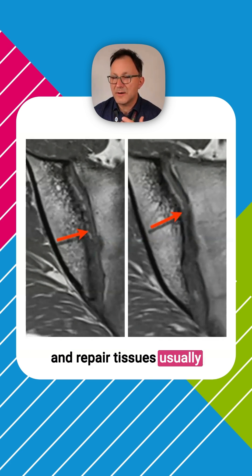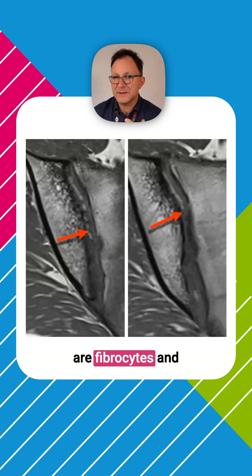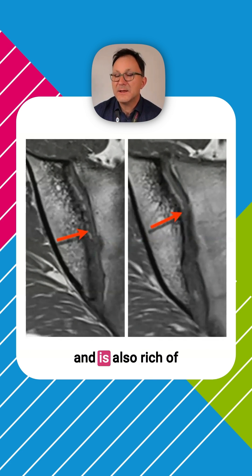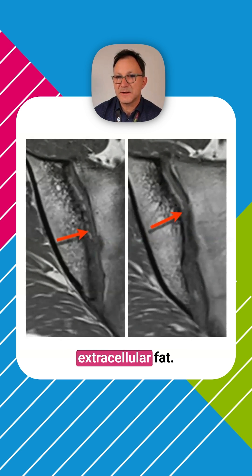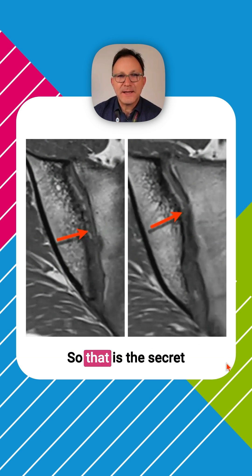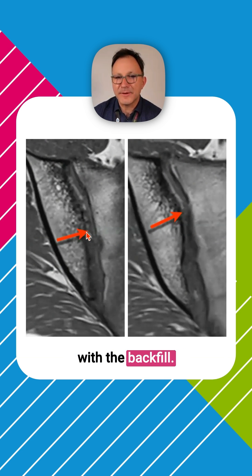Repair tissue usually consists of fibrocytes and extracellular matrix, and is also rich in fat components like fatty cells, but also extra-articular fat. So that is the secret with the backfill.